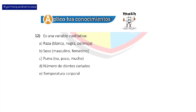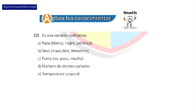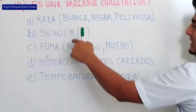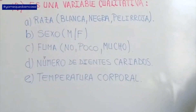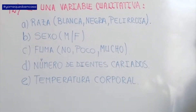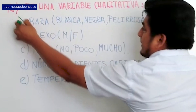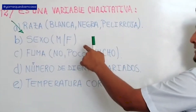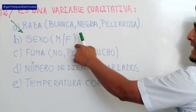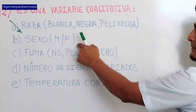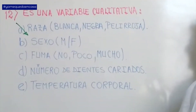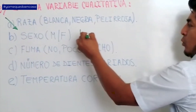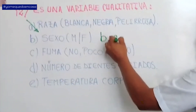En la pregunta 12 me dice: ¿es una variable cualitativa? Hay aquí dos alternativas, la A y la B. La alternativa correcta es la A. ¿Por qué no es la B? Porque si bien es cierto también expresa una cualidad, pero esta variable tiene un nombre especial, llamada variable cualitativa binaria.